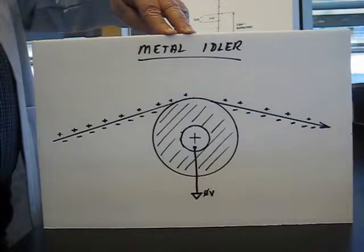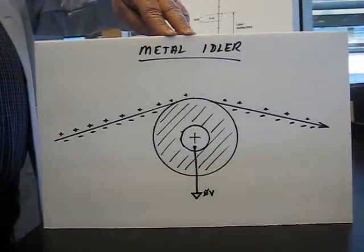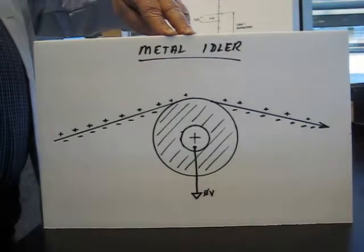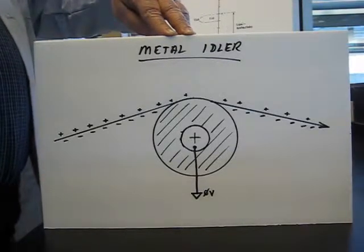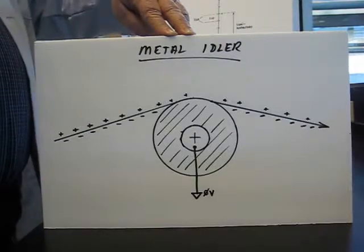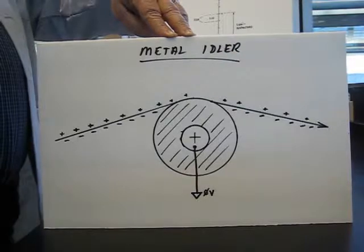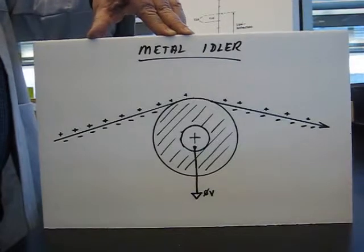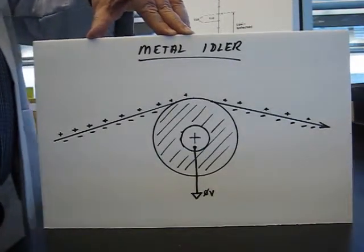The static can cause injury to personnel through shocks or people being thrown back and falling on something else. There are product and process effects such as web tracking wrinkling and that sort of thing. Static can attract dirt and contamination it can damage electronics and then there's always the danger of fires and explosions if solvents are being used such as a gravure coder or something like that.